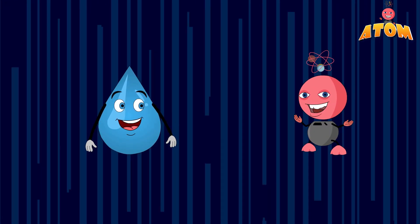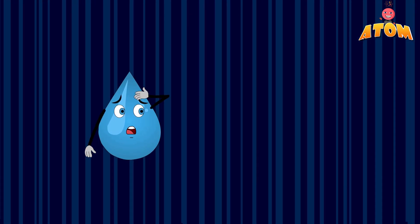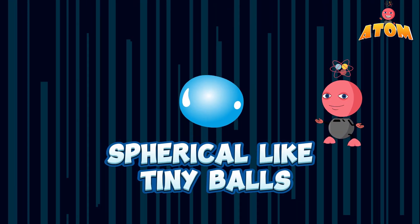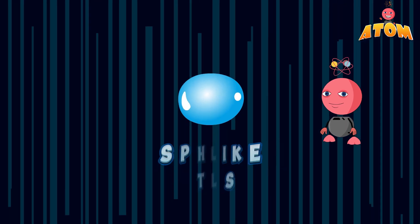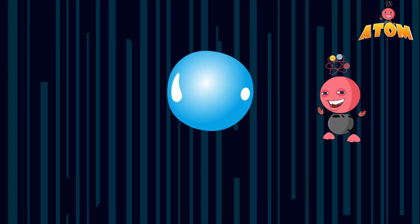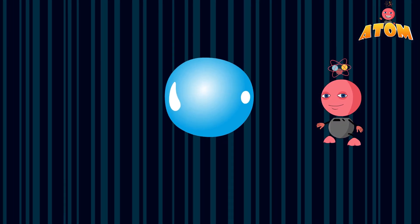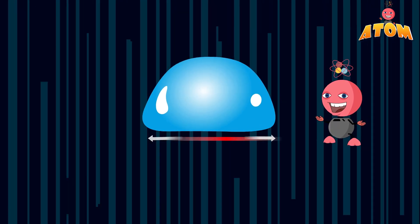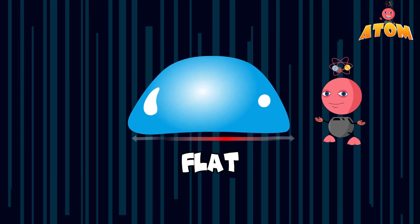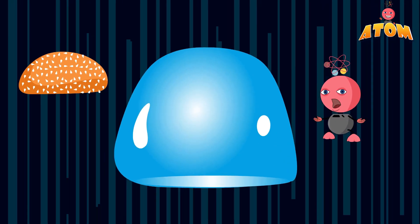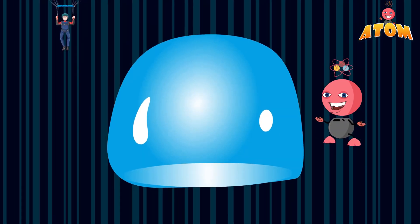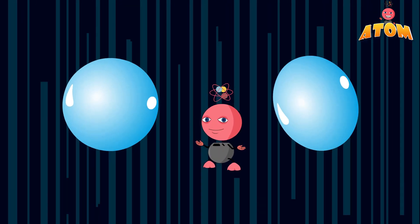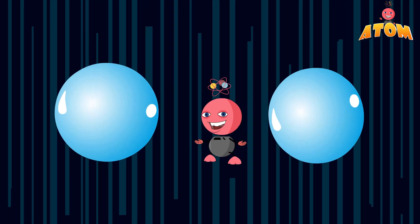But what do raindrops look like? Contrary to popular belief, they're not shaped like teardrops. Small raindrops are spherical, like tiny balls. As they grow bigger by colliding with other droplets, their shape becomes more like a hamburger bun — rounded on top and flat on the bottom. The biggest raindrops become parachute-like in shape; however, if they're too big, they become unstable and break apart into smaller droplets again.